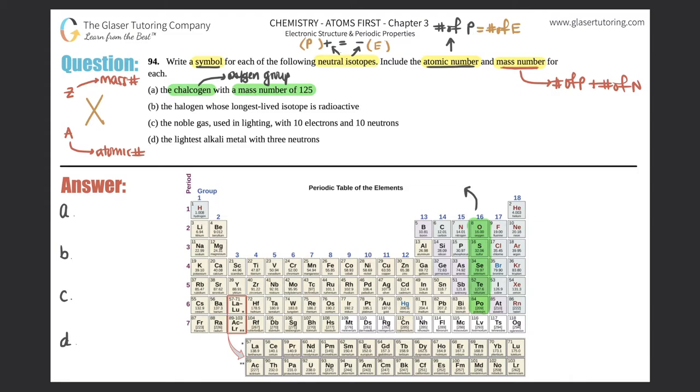These are your chalcogens. The chalcogen with the mass number of 125—well, that doesn't really tell me much, but I know that whatever it's going to be, the 125 should be in the upper left hand corner because that's the mass number. But now if I scan here, I don't really see a 125.